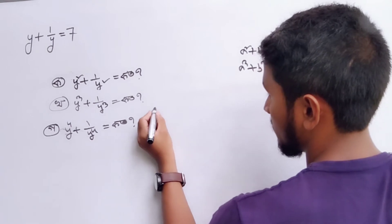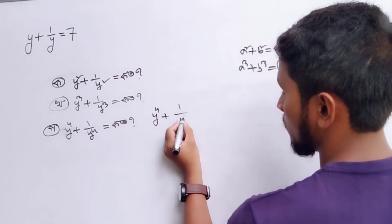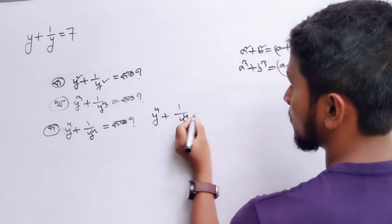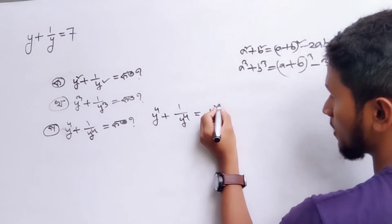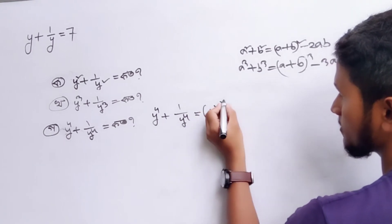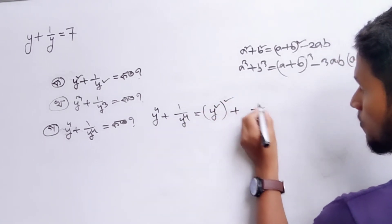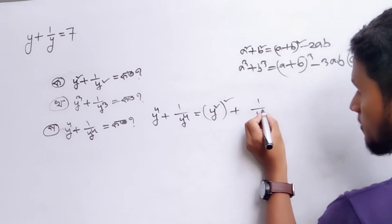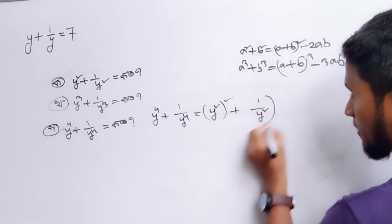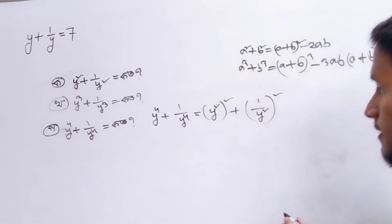y to the power 4 plus 1 by y to the power 4. It's about y² squared equal to 2. y² plus 1 by y² equal to 2. You can see...